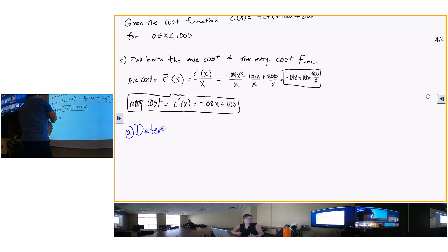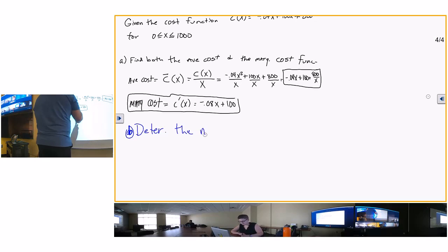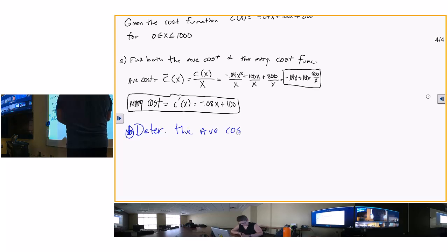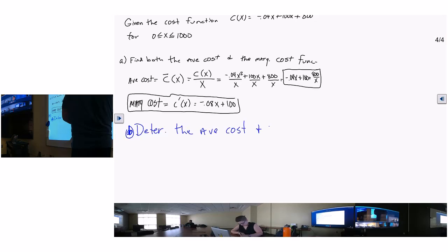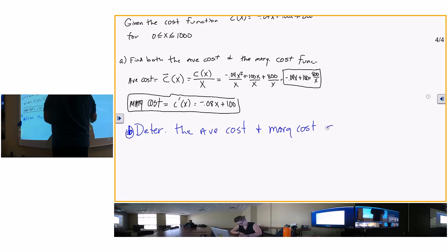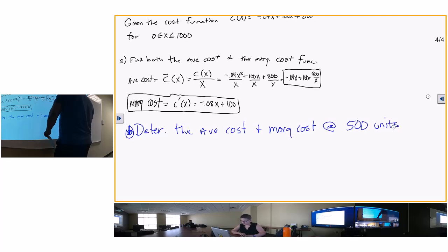And now take the first derivative and find your marginal cost. Marginal cost is equal to c prime of x, which is going to be equal to - two times four cent is eight cent, right? So negative 0.08x plus 100. And that's your marginal cost.